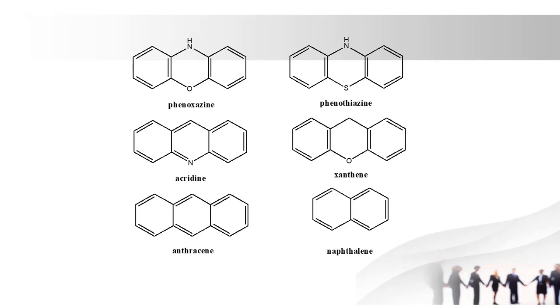Next one is acridine. Acridine contains 2 phenyl rings and 1 pyridine ring. The drug quinacrine contains the acridine ring. Next one is xanthine. Xanthine contains 2 phenyl rings and 1 pyrimidine ring.